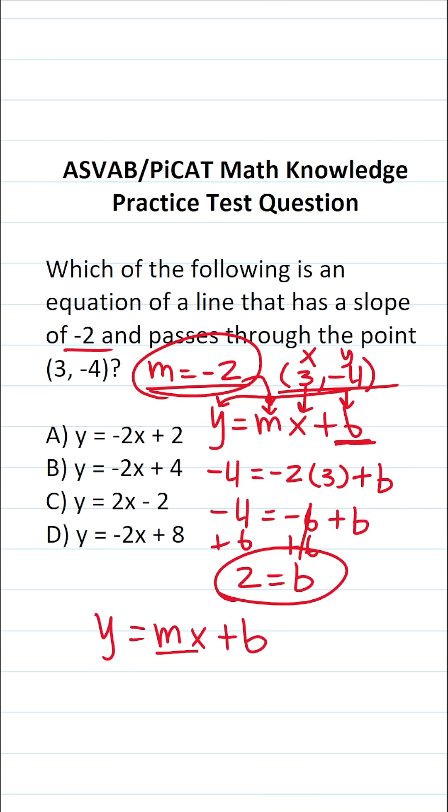m here is negative 2, so this becomes y equals negative 2x. b is right here, it's positive 2, so this is negative 2x plus 2. So this is the equation of the line that we've written given the information we have, and as you can see, that is answer choice A.